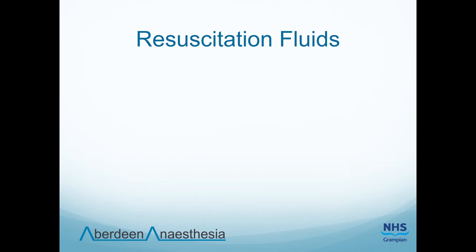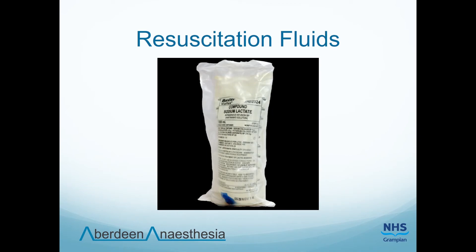The last type of IV fluid we prescribe is resuscitation fluid, for patients who are shocked and hypotensive. These patients should receive a balanced crystalloid such as Hartmann's as a bolus of up to 20 to 30 mls per kg, followed by urgent reassessment after each bolus. There is no point in giving the bolus and then leaving the ward — the patient must be reviewed immediately after to assess the response. The only exception is if the patient is bleeding, in which case blood is the best thing to give.